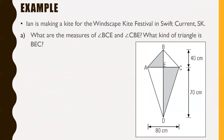Ian is making a kite for the Winscape Kite Festival in Swift Current, Saskatchewan. What are the measures of angle BCE and angle CBE? Angle BCE is this angle in the corner. We need to know some side lengths — notice it told us this section is 40 centimeters. It also says 80 centimeters from one side to the other, so since it's a kite developed evenly, this side is also 40, because it's one half of the full 80.